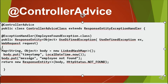The method returns a ResponseEntity of type Object. You define a LinkedHashMap, put in the timestamp and a body message 'Employee Not Found', and return it. So if the employee is not found, the Controller Advice annotation will catch the error message and display it as an error response to the user.